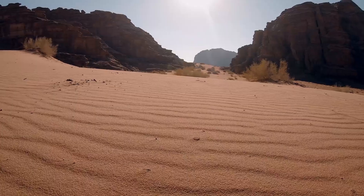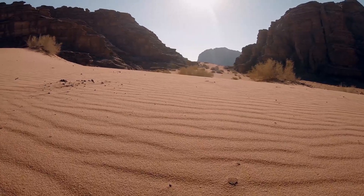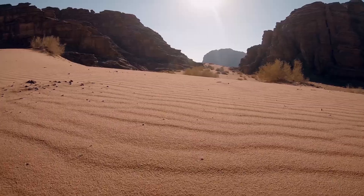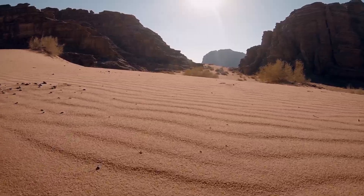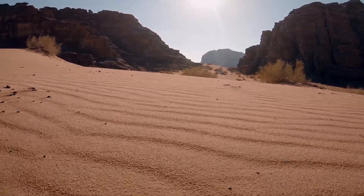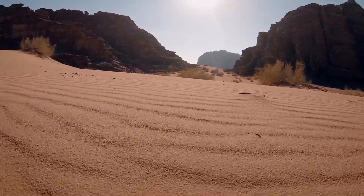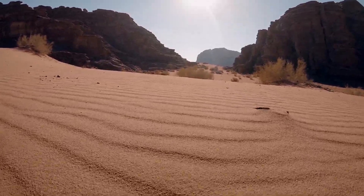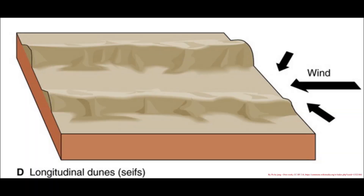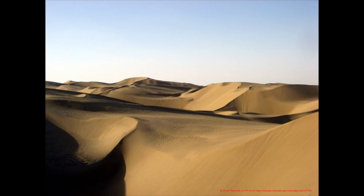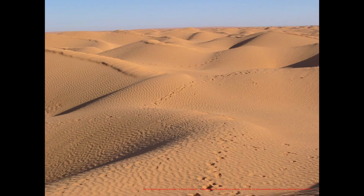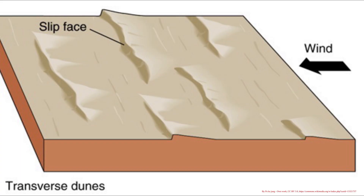When looking at desert landscapes, erosion, transportation, and deposition occur via wind processes. This results in different dune formations, such as longitudinal dunes, crescent-shaped dunes, star-shaped dunes, and transverse dunes.